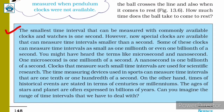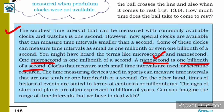In the clocks commonly available to us, the smallest time interval we can measure is 1 second. Special clocks can measure much smaller intervals — as small as 1 millionth or even 1 billionth of a second. These correspond to a microsecond, which is 1 millionth of a second, and a nanosecond, which is 1 billionth of a second. Such clocks are used for scientific purposes.